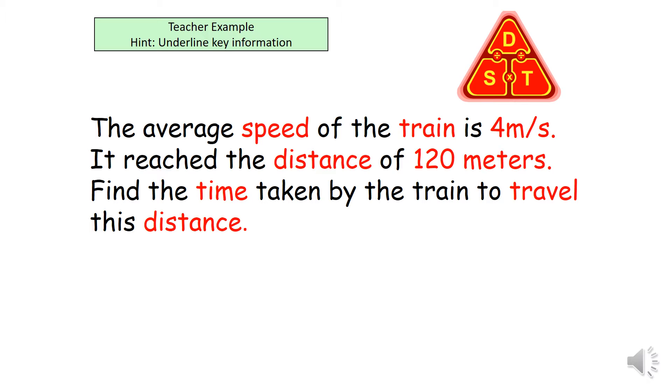The average speed of the train is 4 meters per second. It reaches the distance of 120 meters. Find the time taken by the train to travel this distance.